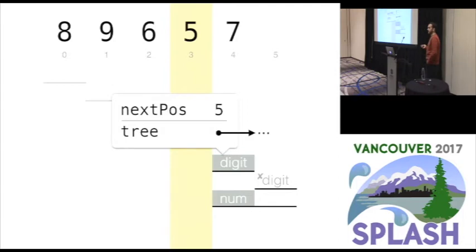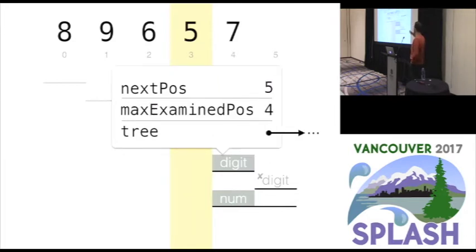Remember before I said that quite often we have these absolute positions that are stored in the memo table entries. So we might have for this entry, nextPosition 5, right? And this is referring to an absolute position in column 5 here. And we had the maxExaminedPosition, which I said we needed to introduce as well, right?